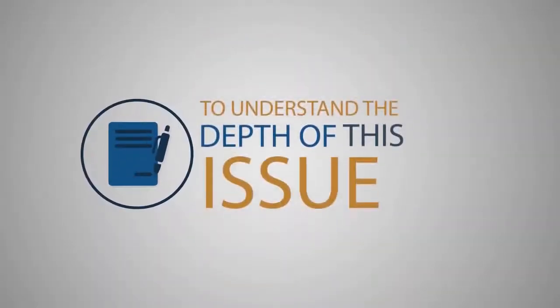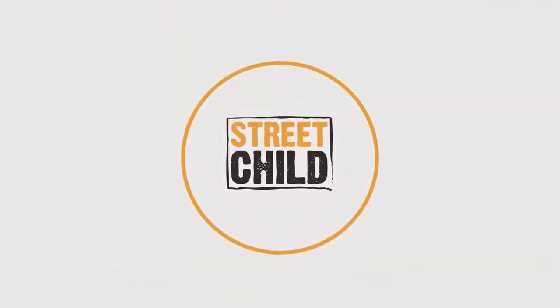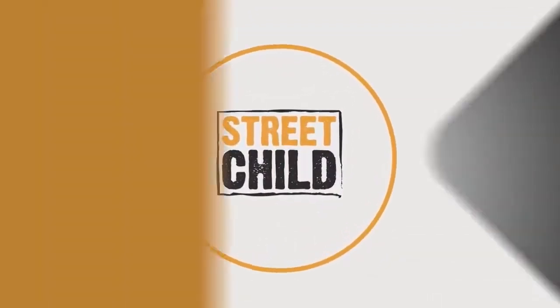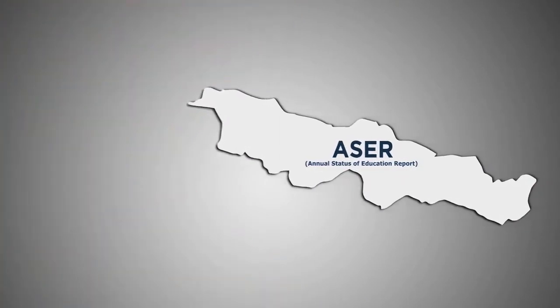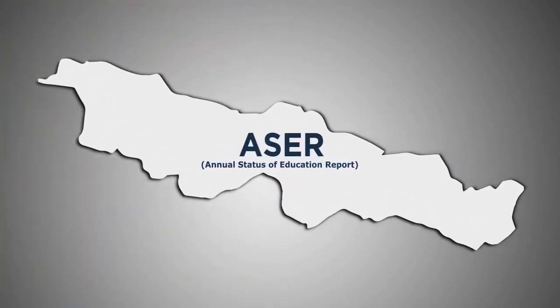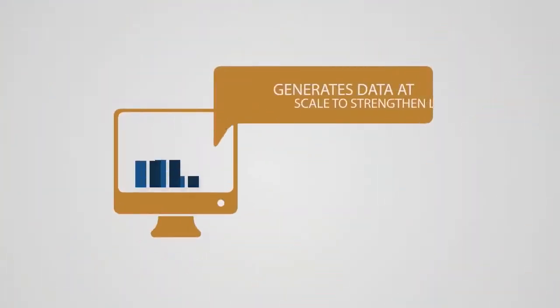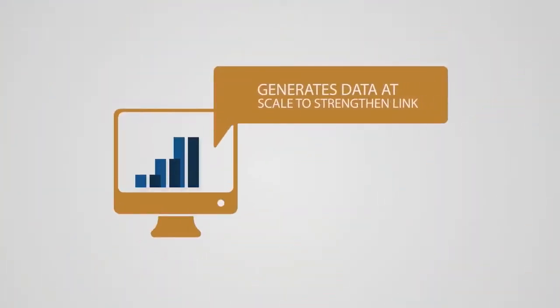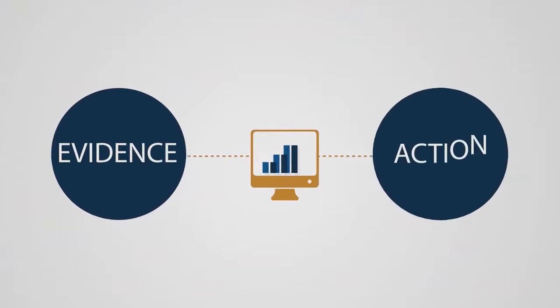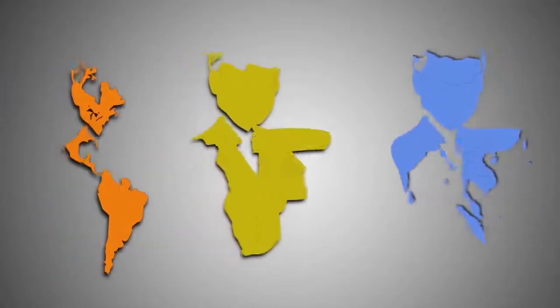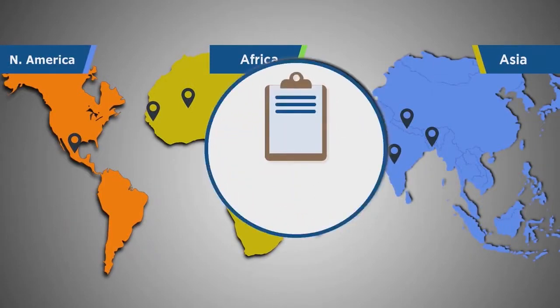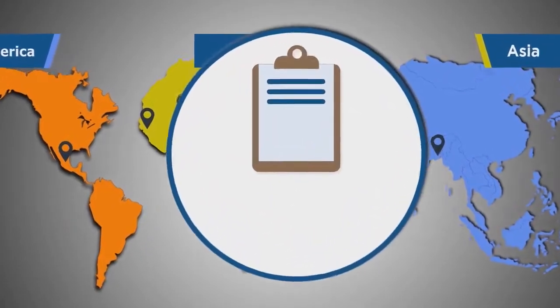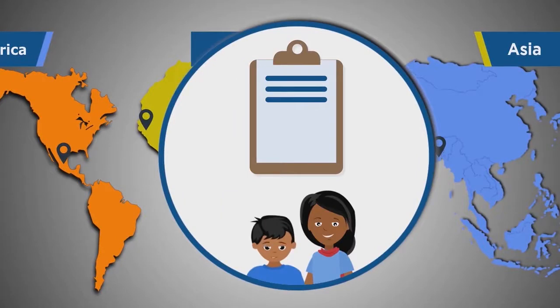To understand the depth of this issue, in 2019, Street Child led an annual status of education report, also known as ASAR Assessment, in Province 2 of Nepal. ASAR is a citizen-led, household-based survey that generates data at scale to strengthen the link between evidence and action. This model is used across three continents to assess the basic reading and numeracy competencies of children through annual assessments to inform targeted initiatives that can improve their learning.